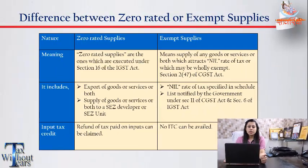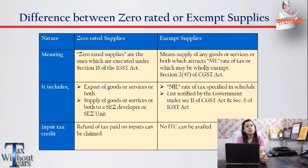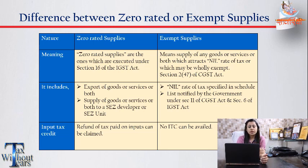A major question comes up: are zero rated supplies and exempt supplies the same? No, my dear friends, they are totally different terms. Zero rated supplies are defined in section 16 of the IGST Act, which includes export of goods and services and supplies made to SEZ units and developers. In this case, you can claim the input tax credit of the taxes paid.